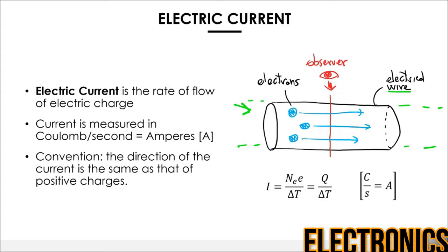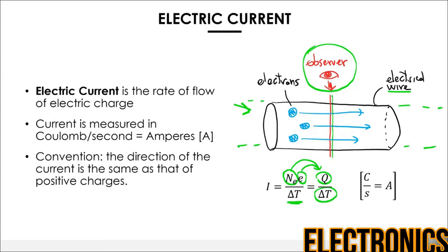Let's say you have three electrons on the left side and you are an observer somewhere in the middle of the wire, monitoring a certain section. I could ask you to do an experiment: in a certain amount of time delta T — it could be one second, one hour, one year, one microsecond, as long or as short as you want — you sit there and count the number of electrons that pass from left to right. At the end of the experiment you will have a certain number of electrons times E, which gives you the total amount of charge that passed. If you divide that total charge Q by delta T, what you get is the electric current.